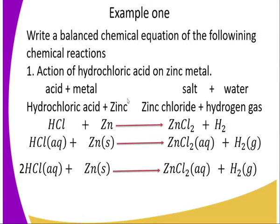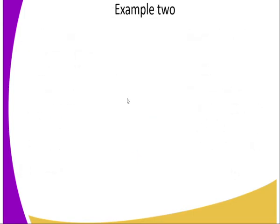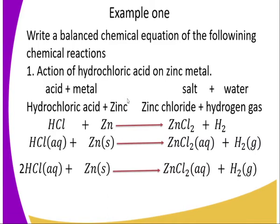Example one: write a balanced chemical equation for the action of hydrochloric acid on zinc metal. Recall that acid reacts with metal to give salt and hydrogen gas. Step one — word equation: hydrochloric acid + zinc → zinc chloride + hydrogen gas. Note: we do not use an equal sign, as reactants are never equivalent to products. Step two — chemical formulas: HCl + Zn → ZnCl₂ + H₂.